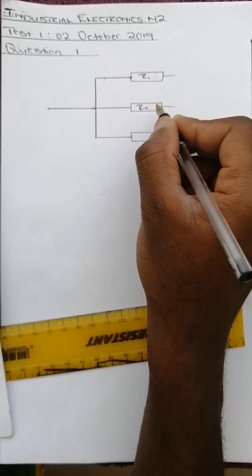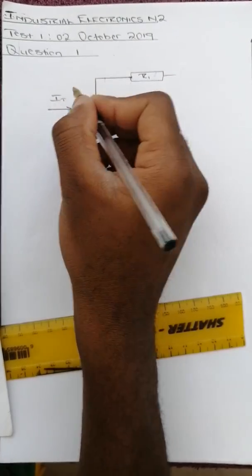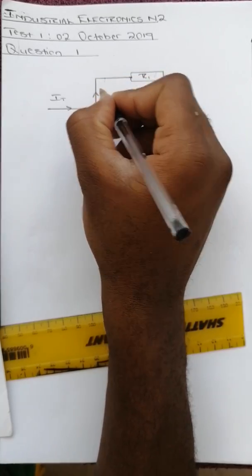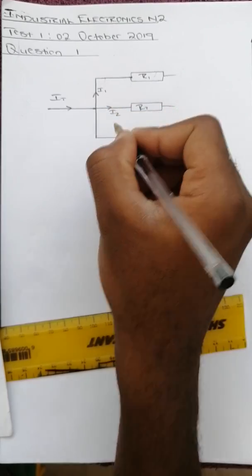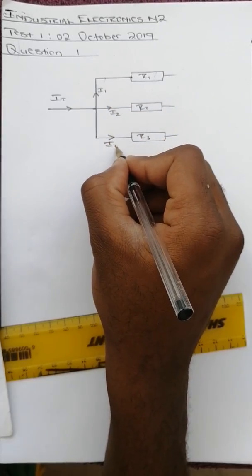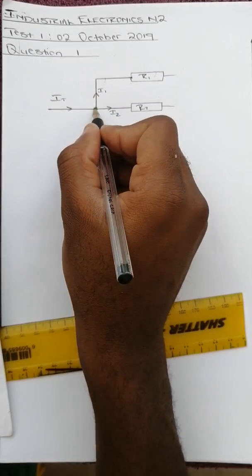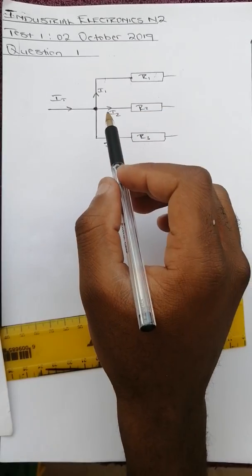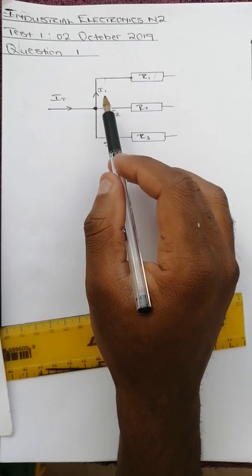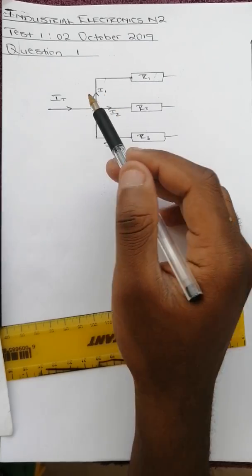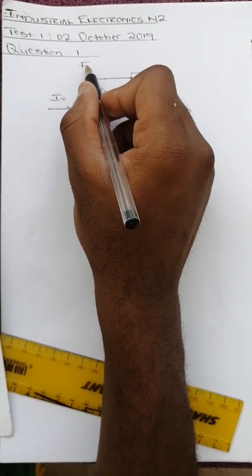Resistor 1, Resistor 2, Resistor 3. We've got I total, then we've got I1, I2, and I3. What this means is that the current going into this junction, which is IT, equals the sum of these split currents. So I1 plus I2 plus I3 equals IT. That's the first law.